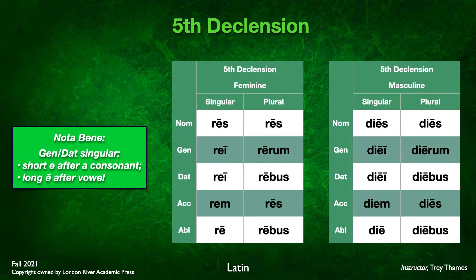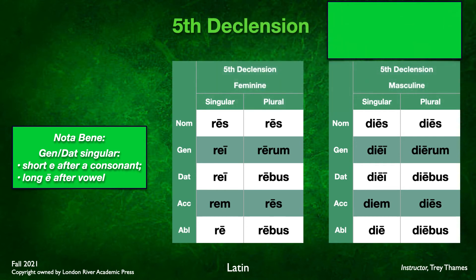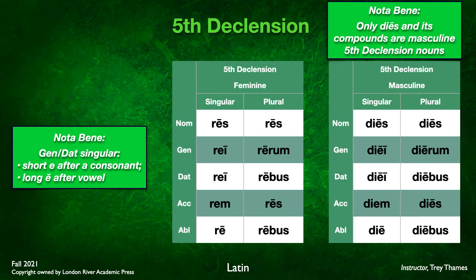Nota bene: only diēs and its compounds are masculine in the fifth declension. Diēs is the nominative singular — you take the -ēs, drop that ending, and that leaves you the stem diē-. Notice that because the e in the genitive and dative singular is following a vowel, we're going to have a macron over the e: diēī, diēī, diem, diē, diēs, diērum, diēbus, diēs, diēbus. So we've got res, reī — meaning affair or thing — and diēs, diēī — meaning day. Those are our two paradigms showing the vowel-stem and consonant-stem genitive/dative variants.